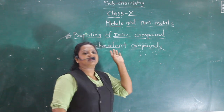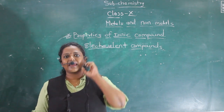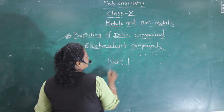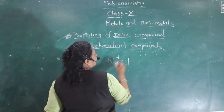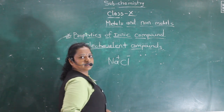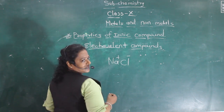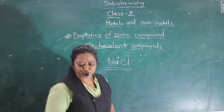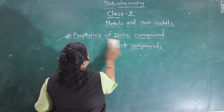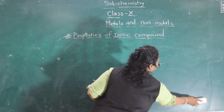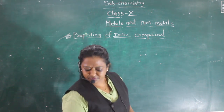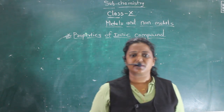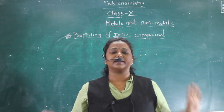Ionic compounds carry charges on them. NaCl is an electrovalent compound, or an ionic compound. Now we will explain some properties of ionic compounds. All salts are ionic compounds.